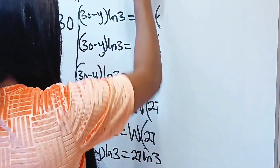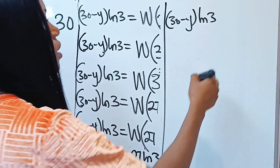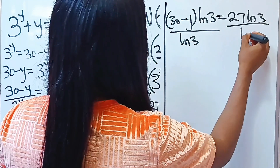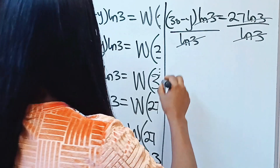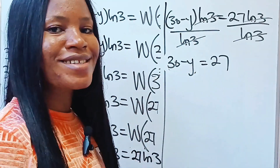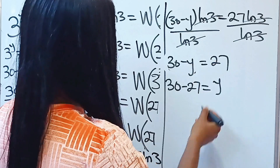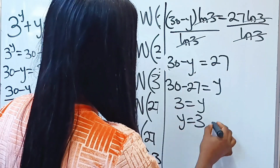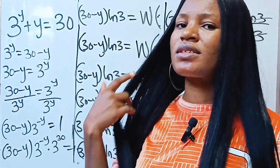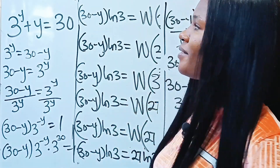Now we have (30 − y)·ln3 = 27·ln3. Dividing both sides by ln3, we get 30 − y = 27. Collecting like terms: 30 − 27 = y, so y = 3. We can verify: 3^3 = 27, and 27 + 3 = 30. Without the Lambert W function, there's no way to solve this. Thank you so much, and have a lovely day!